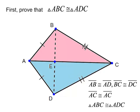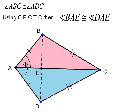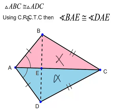If we're trying to prove that BD is perpendicular to AC, we need to show that certain triangles are congruent. Once we've established that the pink and blue triangles are congruent, we can use CPCTC to say that this angle is congruent to that angle.